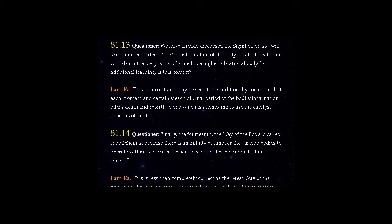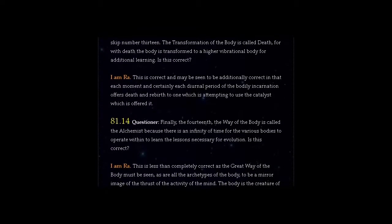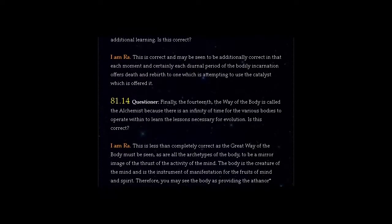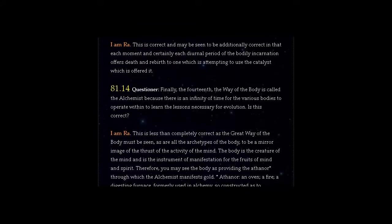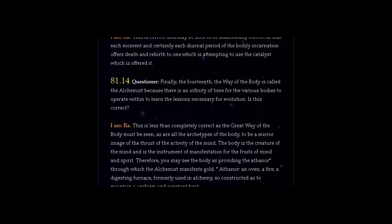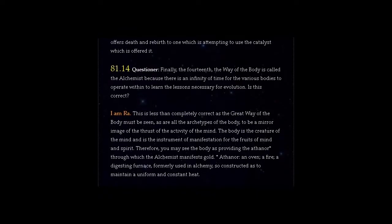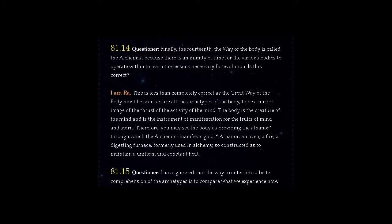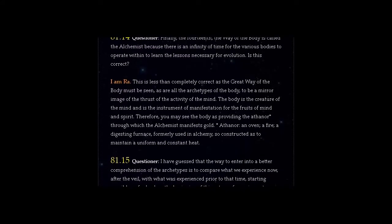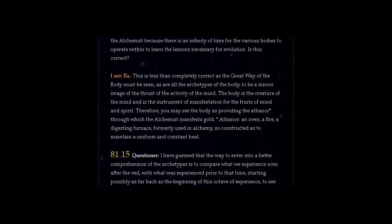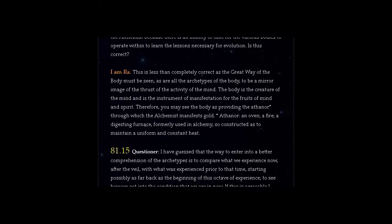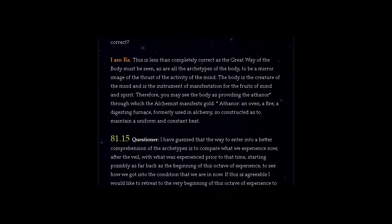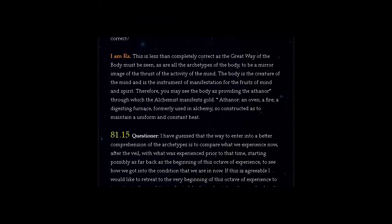Question 81.14: Finally, the fourteenth, the way of the body is called the alchemist because there is an infinity of time for the various bodies to operate within to learn the lessons necessary for evolution. Is this correct? I am Ra. This is less than completely correct as the great way of the body must be seen, as are all the archetypes of the body, to be a mirror image of the thrust of the activity of the mind. The body is the creature of the mind and is the instrument of manifestation for the fruits of mind and spirit. Therefore, you may see the body as providing the Athanor through which the alchemist manifests gold.